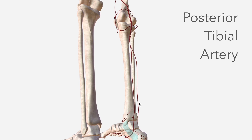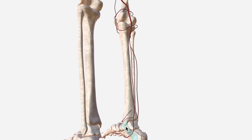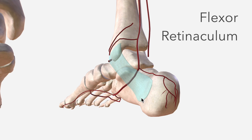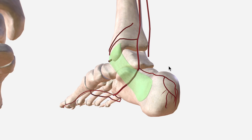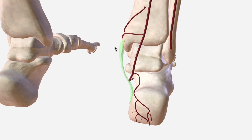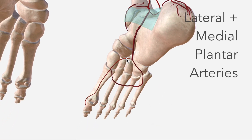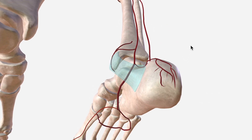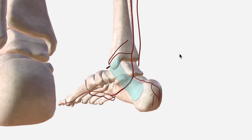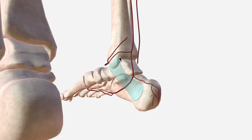It then passes posterior to the medial malleolus — this bony prominence here — and underneath the flexor retinaculum, which is this fibrous band here, and then makes its way into the foot. The posterior tibial artery terminates by bifurcation into the lateral and medial plantar arteries, which supply the plantar aspect of the foot. You can palpate the posterior tibial artery around halfway between the medial malleolus and the Achilles tendon.